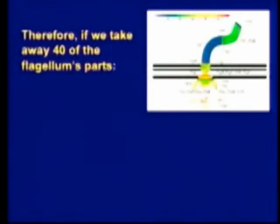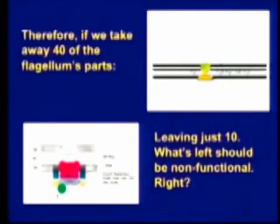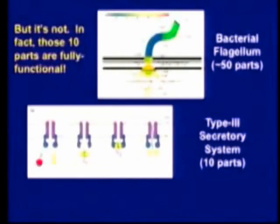Let's take away a whole bunch of the parts — not one, not five, not ten. Let's take 40 of its 50 parts away. I'm going to do that experiment right there. There it goes. The parts are all gone, and I have left 10 parts that span the membrane — 10 proteins in the base of the flagellum. Now, if irreducible complexity is right, this should be absolutely functionless, it should have no function. But what is left behind is not non-functional. What is left behind is the type 3 secretory system, and it is fully functional.